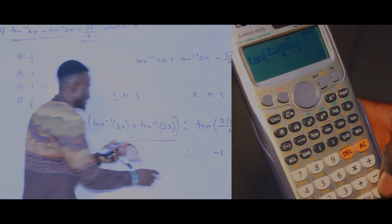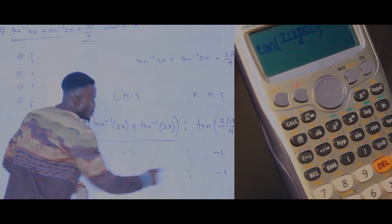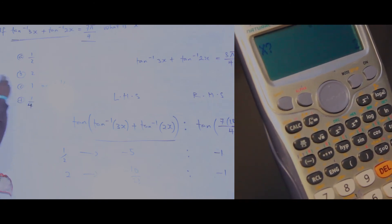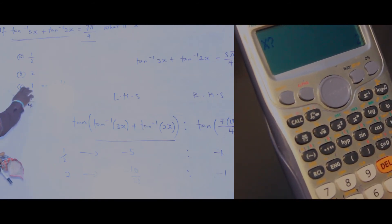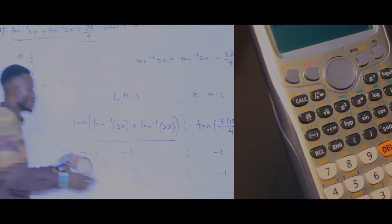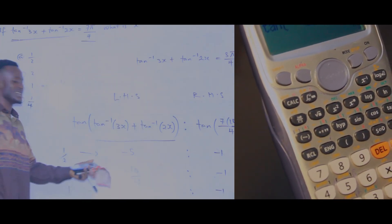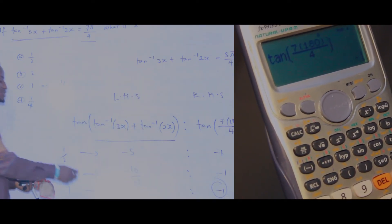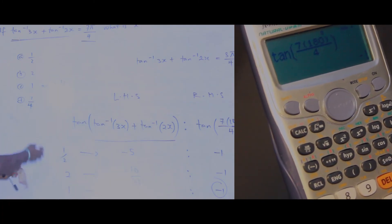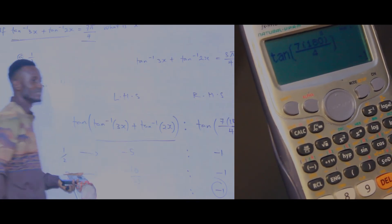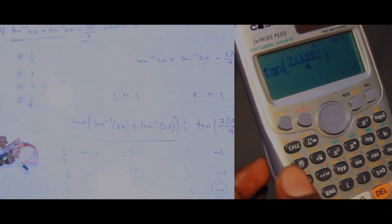Press equals again for the right side — it is minus 1. They are still not equal. Press calculate again and go to option C. Press calculate, then press 1 and press equals. For x equals 1, the left side gives minus 1. Press equals again — the right side is also minus 1. You can see that the left side is equal to the right side. The correct answer which we solved — x equals 1 — gives the left side equal to the right side.